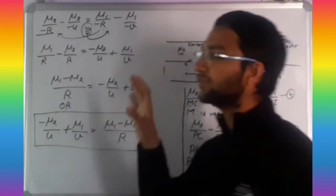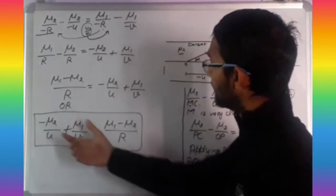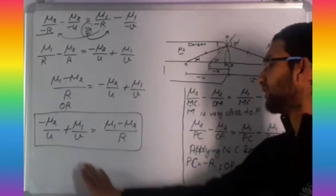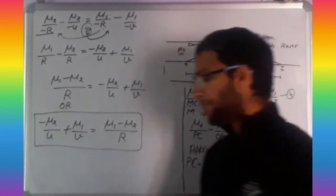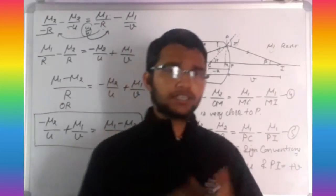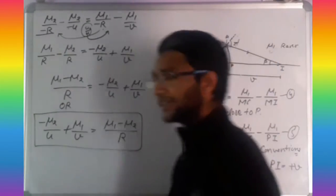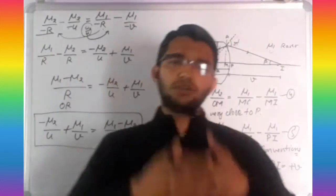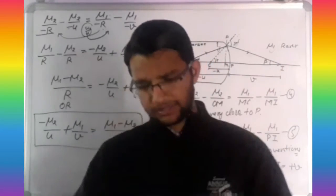The cases for denser to rarer and rarer to denser give the same resultant formula. You must remember this formula — sometimes questions ask for the formula in terms of radius and refractive indices. Today's topic on refraction at spherical surfaces is complete. Tomorrow we will start the very important topic of lenses. Thank you, have a nice day and best of luck.